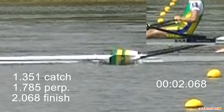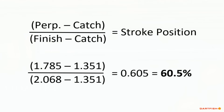Now that we have the times for catch, perpendicular, and finish, we can calculate the stroke position. This slide shows the formula to calculate stroke position — it is the percentage of time from the catch to perpendicular relative to the entire stroke. Here we see that this athlete has a stroke position of 60.5%. This measurement is quick and easy and provides coaches an insight to their rigging analysis.